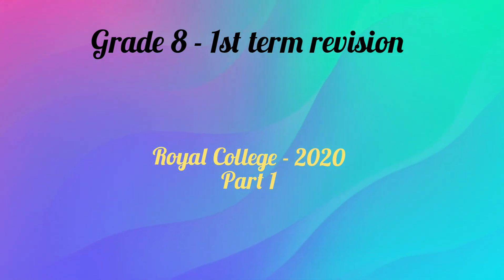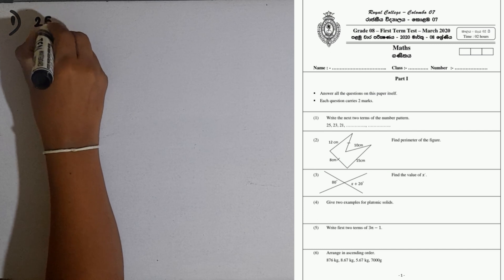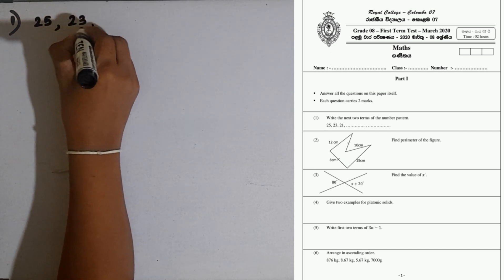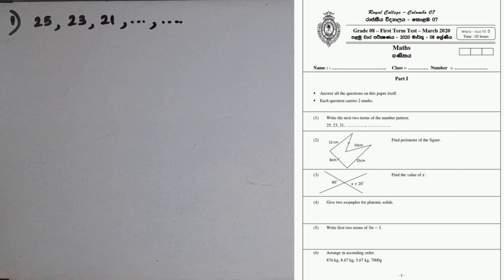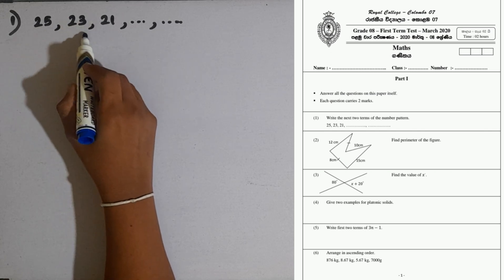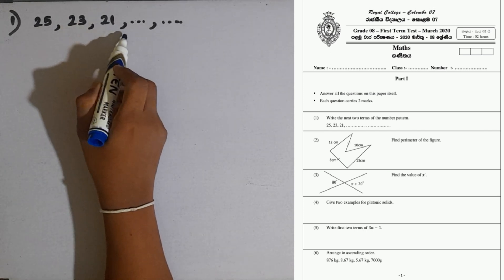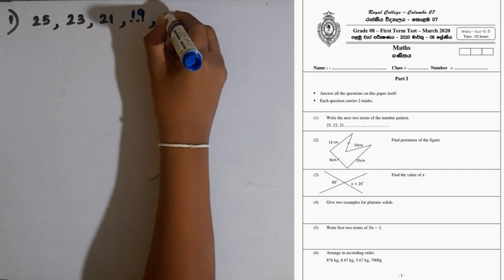You can download this paper from the link given in the description. First question: write the next two terms of the number pattern. We are given the number pattern 25, 23, 21. What is the common difference between each two consecutive terms? Here 21 and 23, minus 2. Here also minus 2. So we have to subtract 2 from this one, then 19. 19 minus 2 is 17.